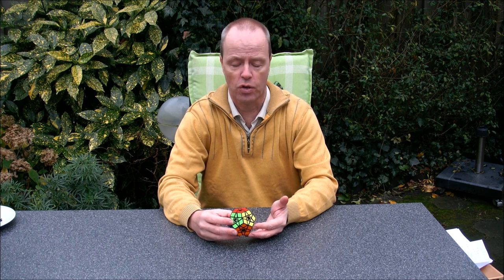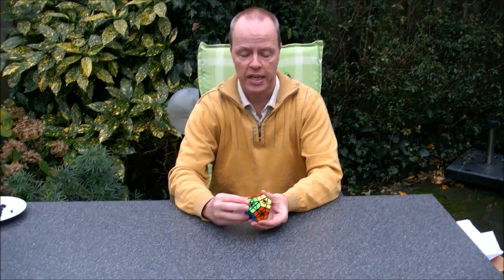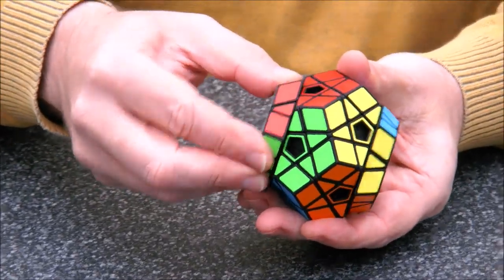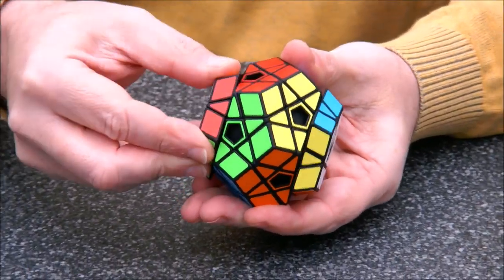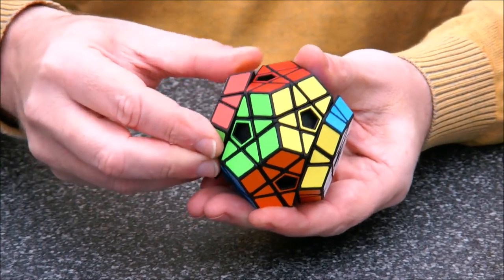It was in 2009, which is more than ten years ago, that Bram Cohen first suggested the concept of Slice Megaminx. And the concept is that when you turn one side of Megaminx, the other side turns together.